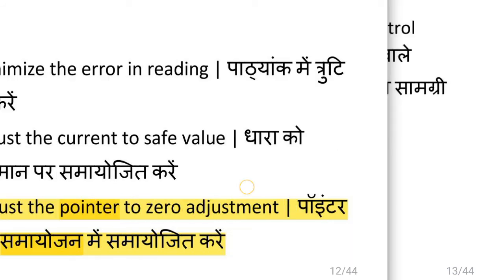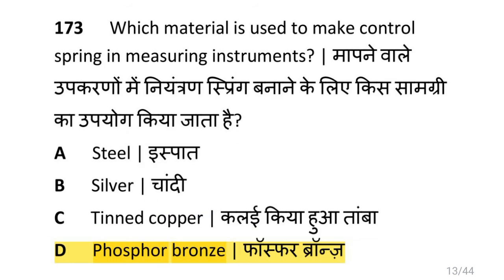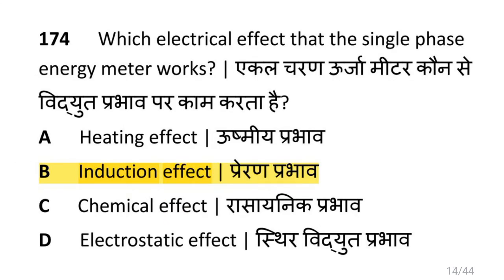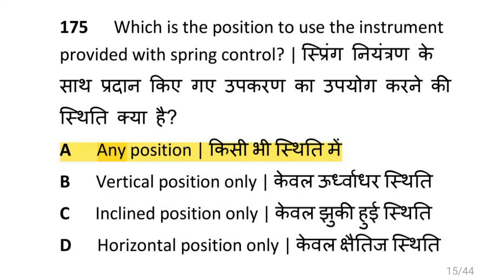Which material is used to make control springs in a measuring instrument? That is phosphor bronze. Which electrical effect does the single-phase energy meter work on? That is induction effect. Which is the position to use the instrument provided with spring control? That is any position.